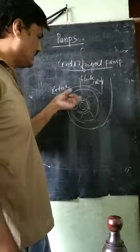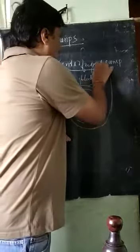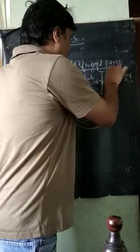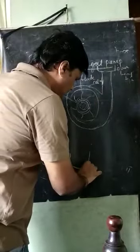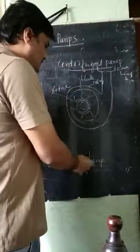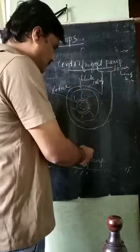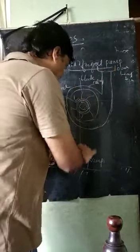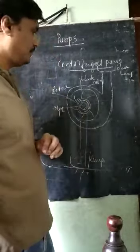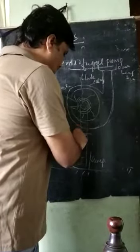This is called the casing. The casing is also there. The fluid has to be lifted somewhere to an overhead tank. Here is the sump with water at the ground level. We want to lift this water to the overhead tank. There will be an inlet pipe connected at the eye position - this is called the eye.